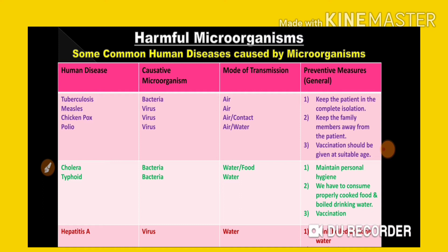Keep family members away from the patient because these are communicable diseases. If the patient coughs or sneezes, viruses travel through the air into a normal person's body. Even touching shared objects like a glass or plate can transfer infection. As seen with coronavirus, infected persons must stay away from family members.